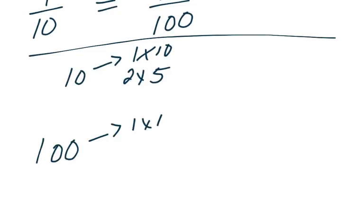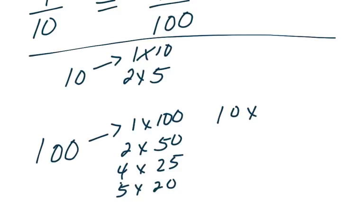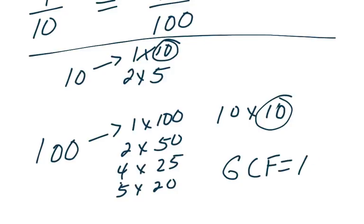That's one times one hundred, two times fifty, four times twenty-five, five times twenty, ten times ten. When we look and we see that our greatest common factor, our GCF, is ten.